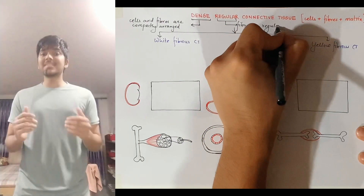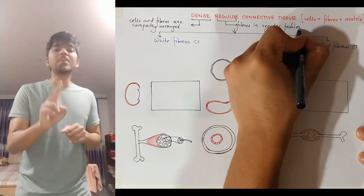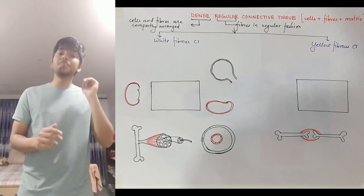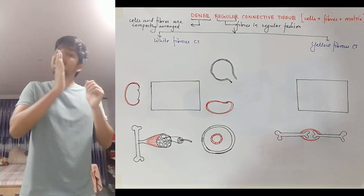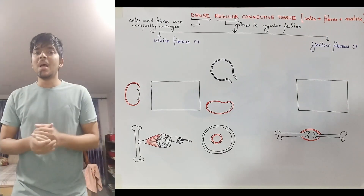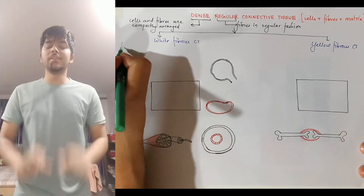This type of connective tissue is categorized under two types: white fibrous connective tissue and yellow fibrous connective tissue. Let's compare both of these.